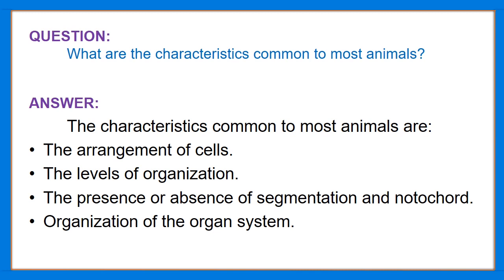The answer is there are four main common characteristics to most animals: the arrangement of cells, the level of organization, the presence or absence of segmentation and notochord, and the organization of the organ system.